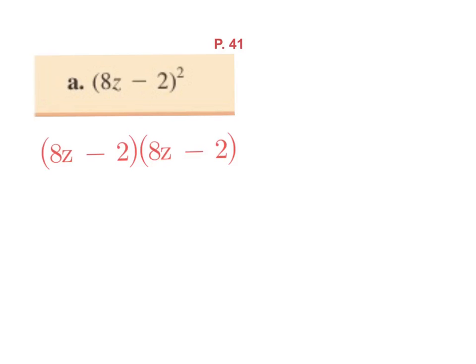So when you foil this out you end up with two things times two things, initially you have four things and then it'll simplify down to three and so what I wanted to make clear was that the answer to this is not 64z squared plus 4 or 64z squared minus 4. Both of those are wrong. And many of you wrote it out which is good.